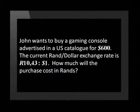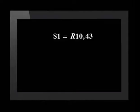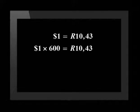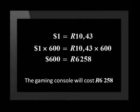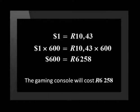Why don't you try to do this on your own? If $1 equals 10 rand and 43 cents, then $600 will equal 10 rand and 43 cents times by 600, which equals 6,258 rand. So the gaming console will cost 6,258 rand.